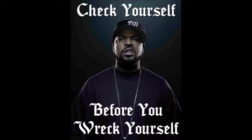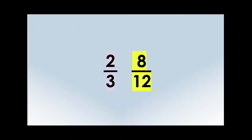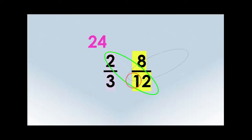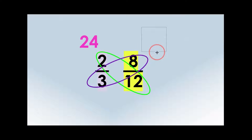Check yourself before you wreck yourself — let's check and make sure our fractions are actually equivalent. My first fraction was two-thirds and my second fraction is eight-twelfths, so let's use the butterfly method. Two times twelve is twenty-four, and eight times three is also twenty-four, so they are equivalent.